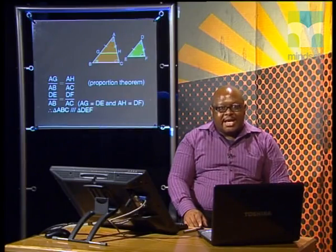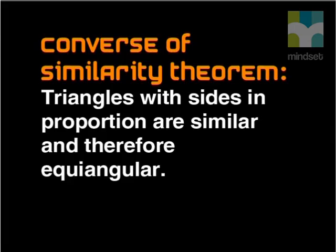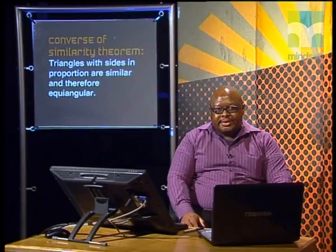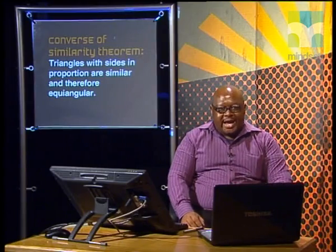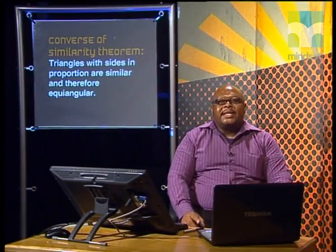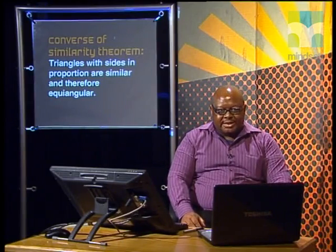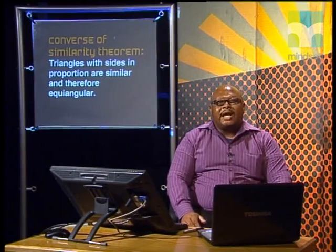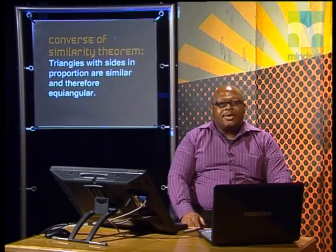This theorem also has a converse. The statement of the converse is: triangles with sides in proportion are similar, and therefore equiangular. So, if you have two triangles, and you know that their sides are in proportion, then you can prove that the triangles are equiangular.